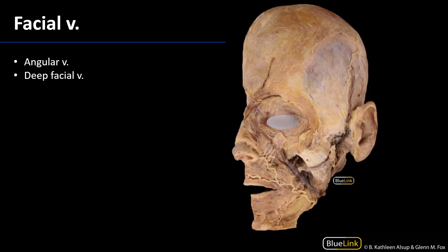The facial vein is very inconstant. We can see it descending here just adjacent to the artery, and it typically has branches corresponding to each branch of the facial artery. For instance, there is an angular vein that can often anastomose with the ophthalmic veins in the orbit. The danger there is that valves are not necessarily typical in this portion of the face, especially in the ophthalmic veins. An infection can track from the angular vein through the ophthalmic veins, which are a direct route back to the cavernous sinus.